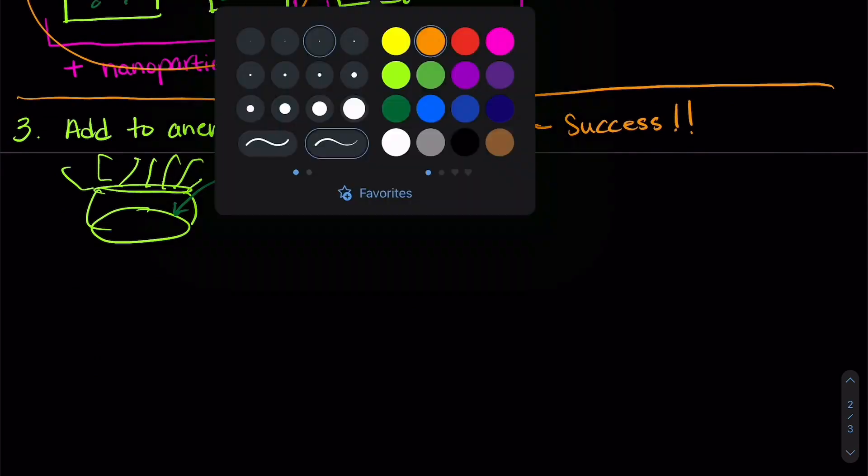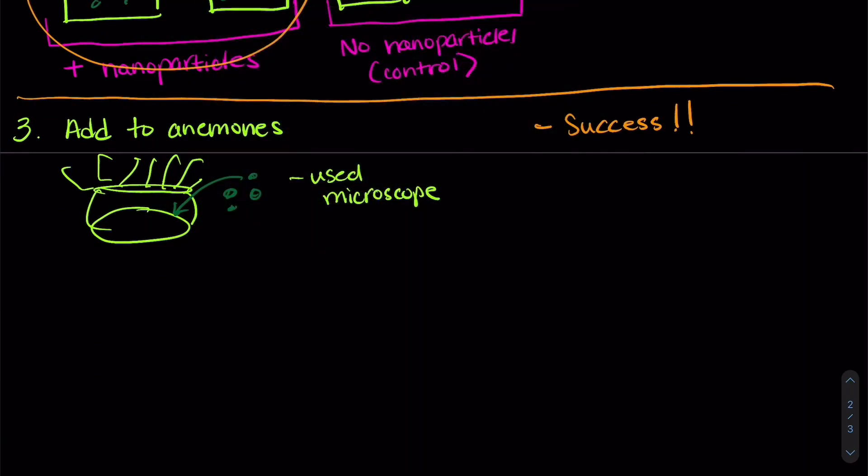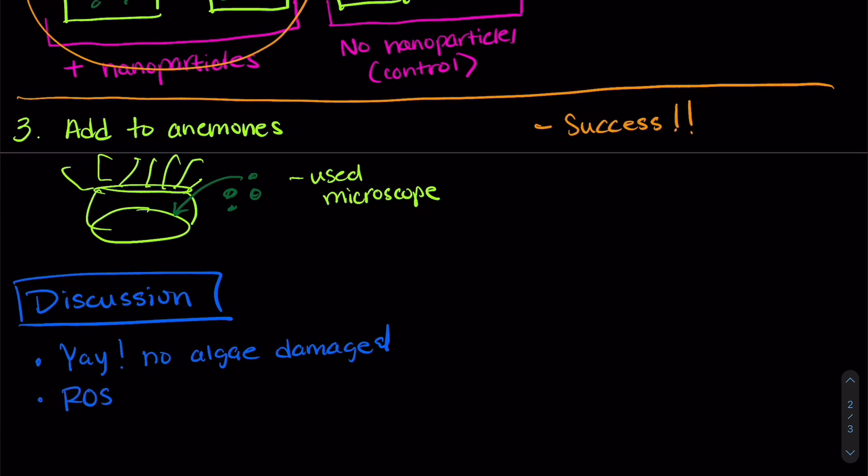So where does that leave us? Let us discuss. So it is great that the algae were not damaged. Yay. No algae damaged by these nanoparticles with the chemicals in them. It's great that our ROS, our reactive oxygen species, decreased even under thermal stress conditions.